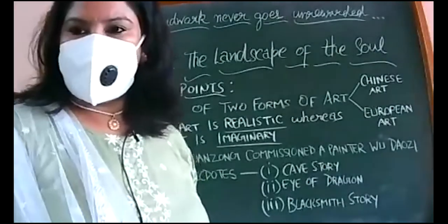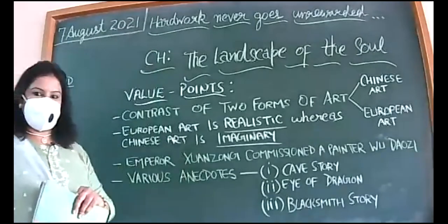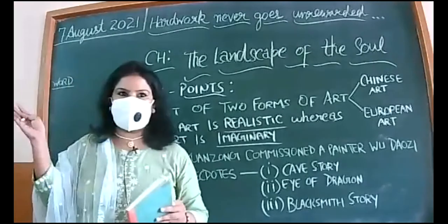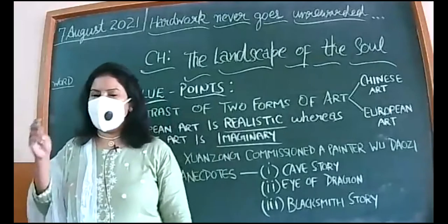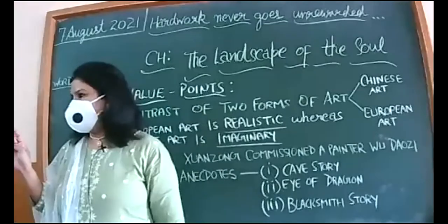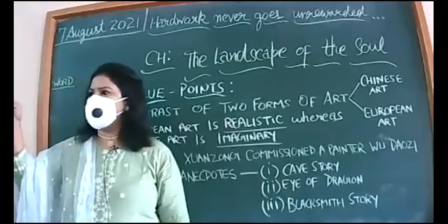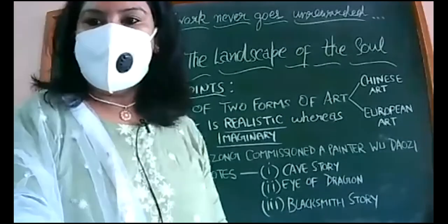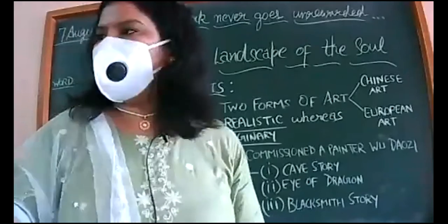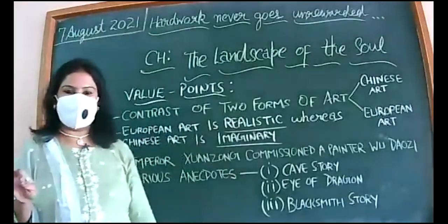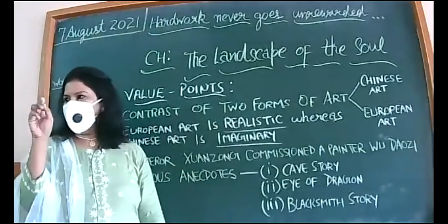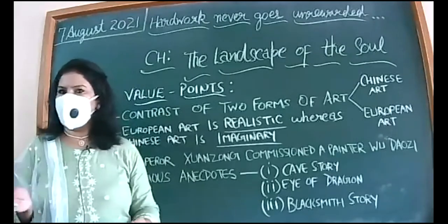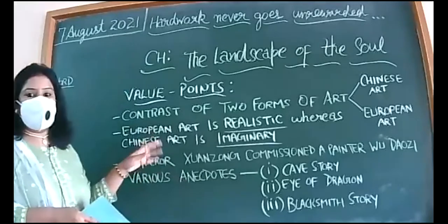Let me make you understand the concept related to this chapter — 'The Landscape of the Soul.' When we hear the word landscape, what comes to your mind? Every person has drawn a landscape — mountains, a garden area, a river flowing, trees. Then we draw a circle, sun, and birds. This is a landscape in layman's language. Now what do we mean by 'The Landscape of the Soul'?